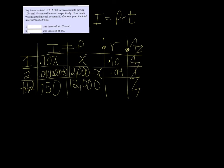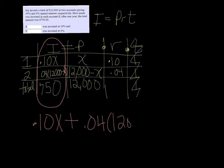My equation is going to come from the interest column. What I have is the interest in one of them is .10x plus the interest in the other one, the .04 times 12,000 minus x, is equal to 750. It's a fairly easy equation to solve.